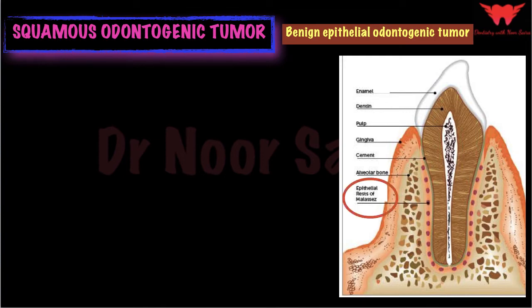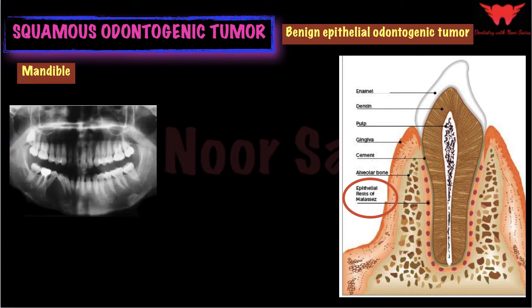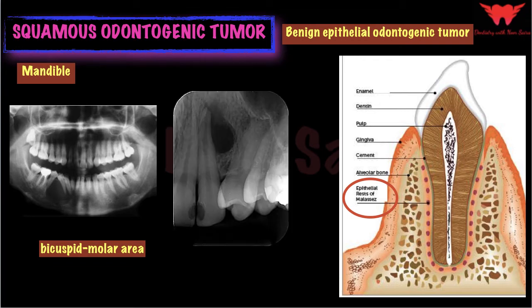These are the remnants of dental lamina or the cell rests of Malassez. It is more common among young adults and has a slight male predilection compared to women. The mandible is the most commonly involved area; within the mandible, the bicuspid or molar area is more commonly involved, while in the maxilla the incisor-cuspid region is more commonly affected.